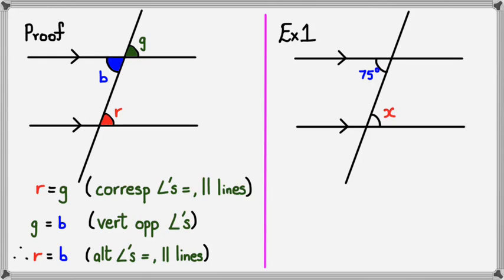Now what I'm trying to tell you guys is that you probably can use corresponding angles and then use vertically opposite, but why do two reasonings when you can just do the simple one which is alternate angles? So in this case, you can clearly say that angle X equals 75 degrees because alternate angles are equal in parallel lines.